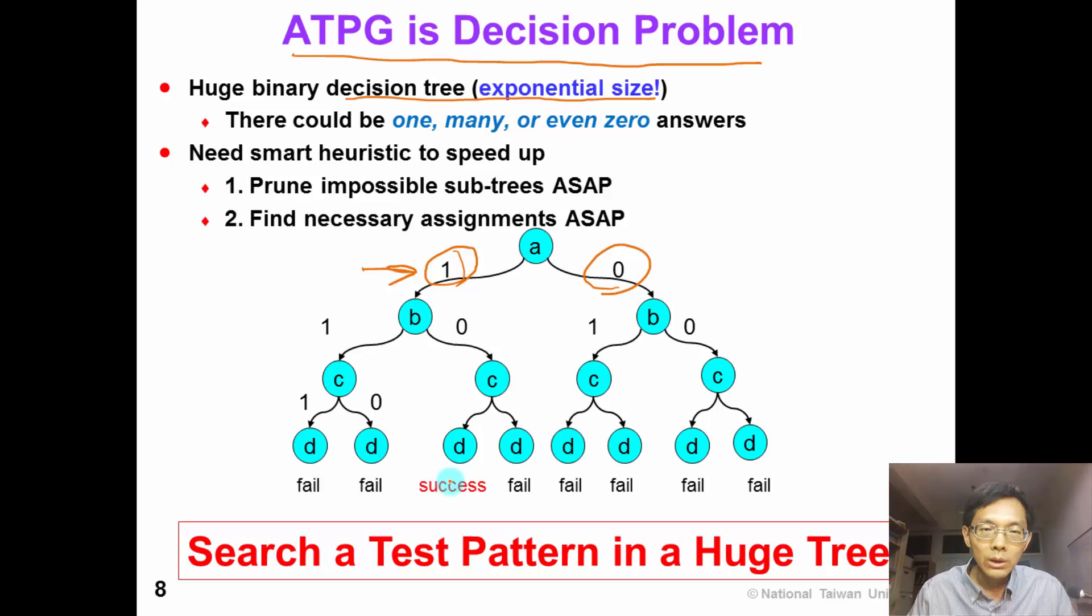And we want to find a solution at the bottom of the tree. There could be 1 solution, many solutions, or even 0 solutions at the bottom of the tree. So this is searching a test pattern in a huge tree.